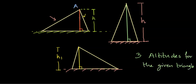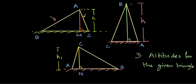We can always name these altitudes by different labels. So in one orientation the altitude is AM, in another the triangle is ABC and the altitude is CN, and in the third orientation the perpendicular dropped can be called BU.